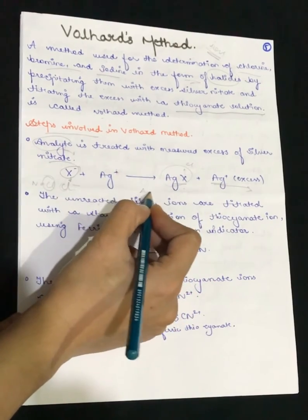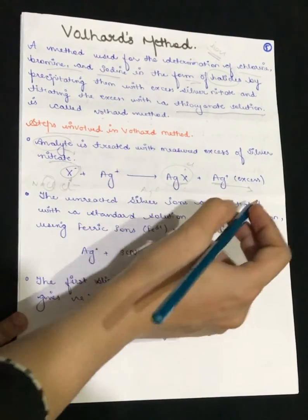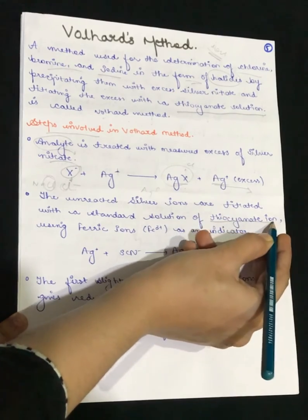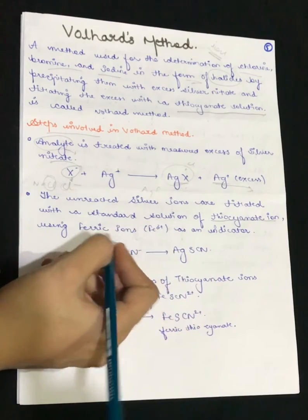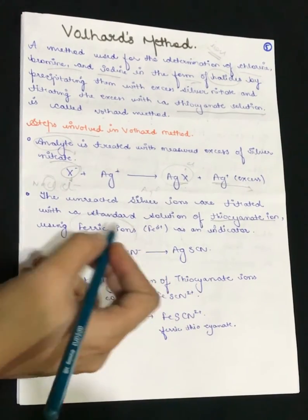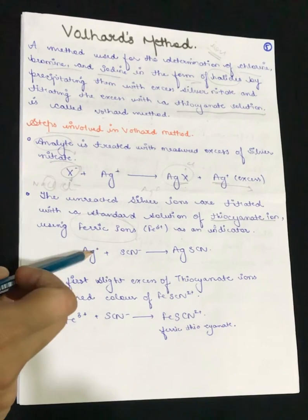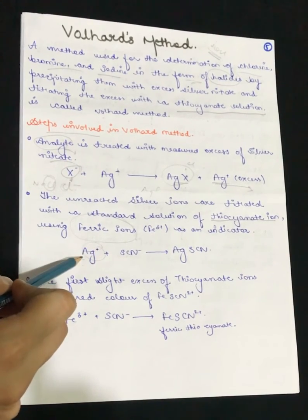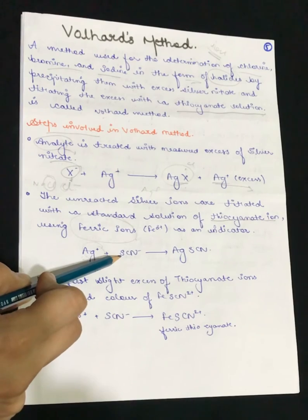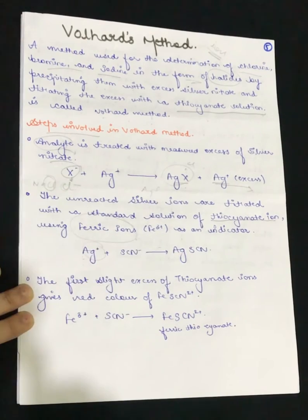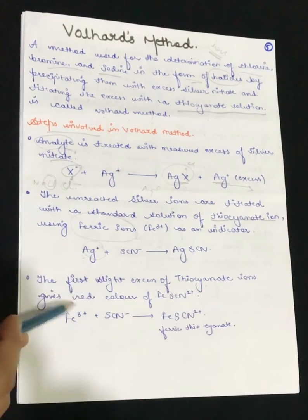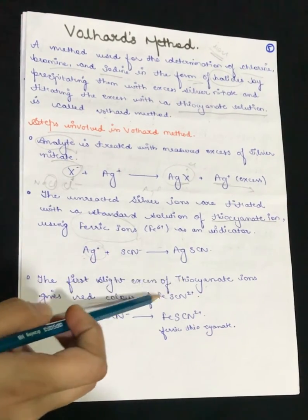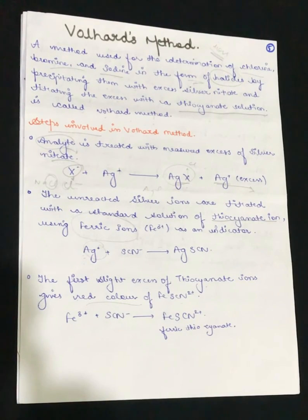The remaining, unreacted Ag⁺ ions are then titrated with a standard thiocyanate solution. We add our indicator — ferric ions (Fe³⁺). The excess silver ions react with thiocyanate ions to give silver thiocyanate. Then the first slight excess of thiocyanate ions reacts with Fe³⁺ to give a red color of ferric thiocyanate, marking the endpoint.